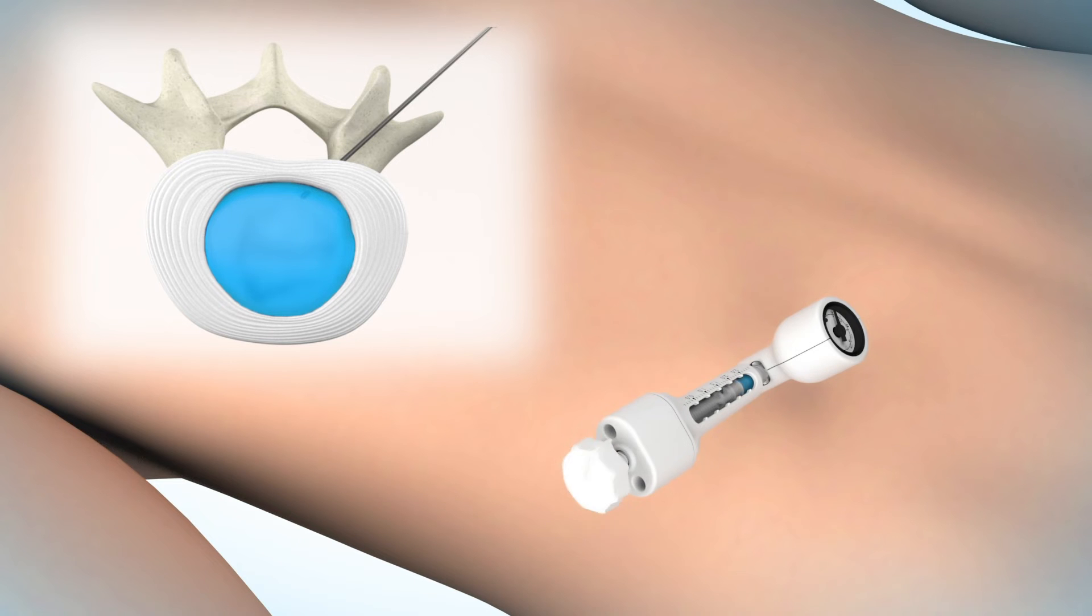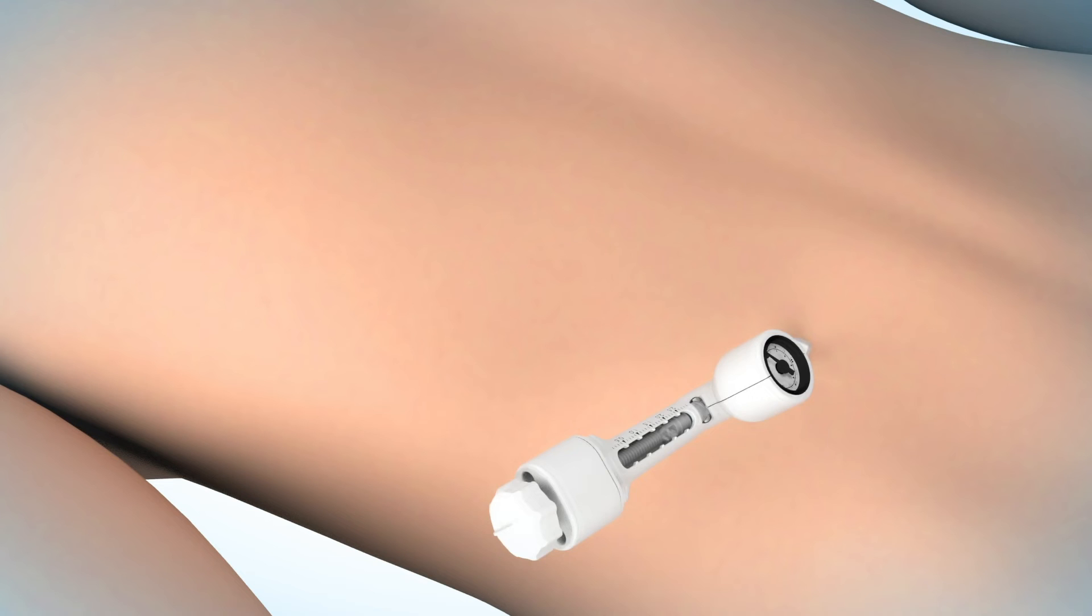Once complete filling is observed, any back pressure is released and the delivery system is disconnected from the needle. The stylet is reintroduced to push any remaining gel into the disc space.